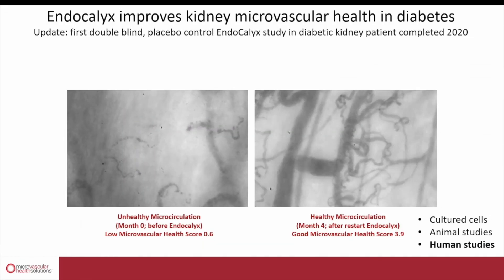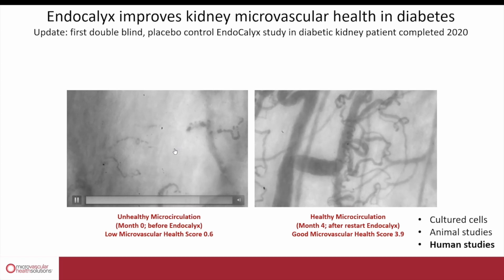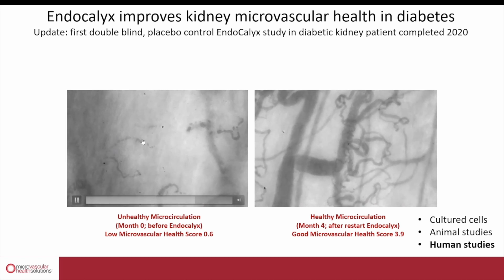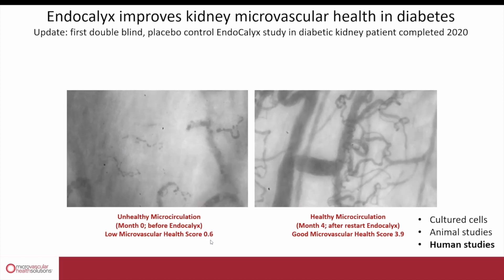In the same line of protecting glycocalyx and microcirculation in kidney patients, we did a clinical trial that we recently completed on the effect of Endocalyx preventing microvascular damage in kidney patients. This is an example of the effect of Endocalyx in kidney patients — a before-and-after image of microvascular perfusion in the sublingual tissue. On the left-hand side was before this individual started taking Endocalyx, and you can appreciate certainly very few capillaries perfused, and blood flow is very slow and sluggish, ending up in a very low overall microvascular health score.